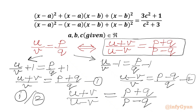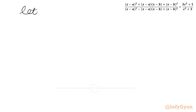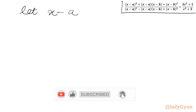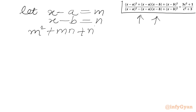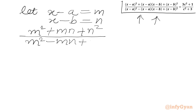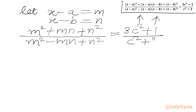We will solve our question using this argument. Let us write x minus a equal to m and x minus b equal to n. So our equation becomes: m squared plus mn plus n squared in the numerator, and m squared minus mn plus n squared in the denominator, equal to 3c squared plus 1 over c squared plus 3 on the RHS. Now consider the LHS numerator as u, denominator as v, RHS numerator as p, and denominator as q.